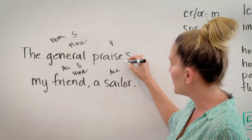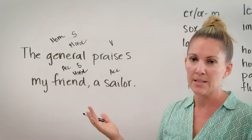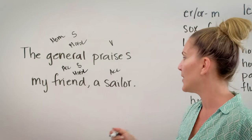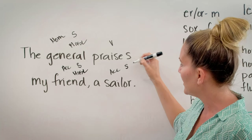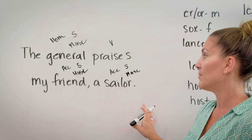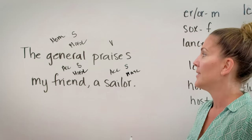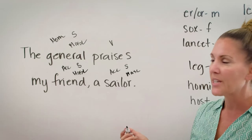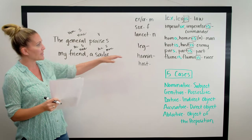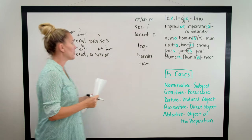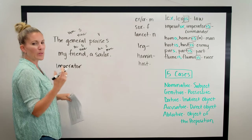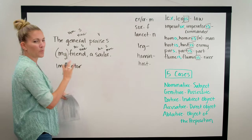Appositives can appear anywhere in a sentence, and the case will depend on the noun they're further describing or identifying. The word 'sailor' is singular and masculine. If I was going to translate this sentence into Latin, I'd start with the subject 'general.' We'll do it the real Latin way — remember, subject, object, verb — and we're not going to translate 'my' for now; we'll leave that implied.